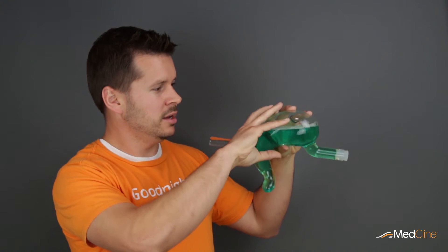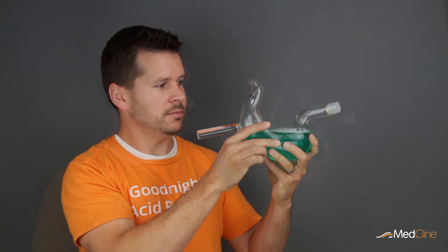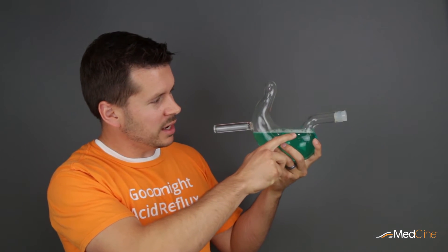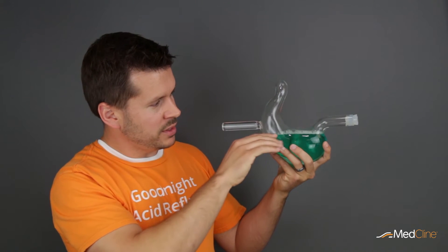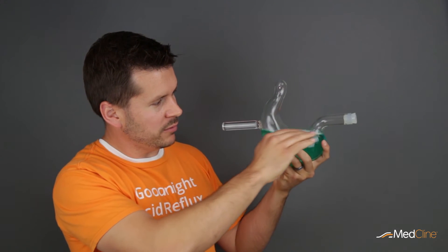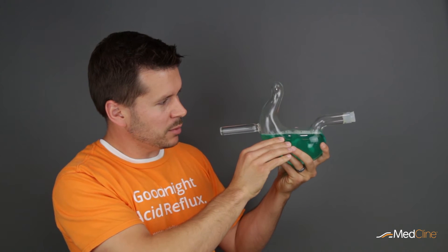So, instead, doctors have you sleep on your left side. This is because when you're on your left side, the lower esophageal sphincter can actually be below this air fluid level or the level of the stomach contents in your stomach.